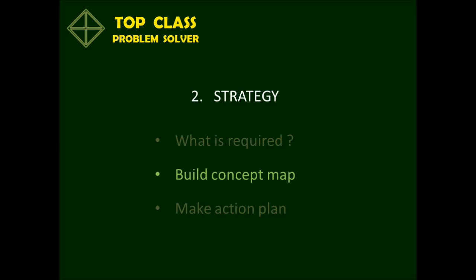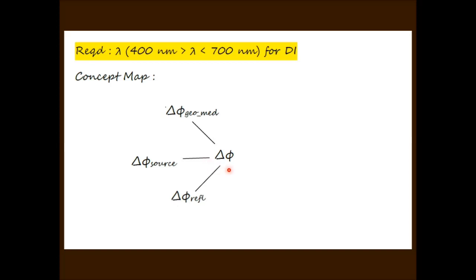The second step of the strategy is to construct the concept map. The concept map relates the parameters that are given in the problem to the required parameter. The core of the solution is that the type of interference is determined by the phase difference delta phi between the two rays arriving at the observer. Delta phi is potentially determined by three possible sources of phase difference. The first consists of a geometric path difference between the paths taken by the two rays, denoted delta phi geo.